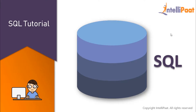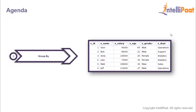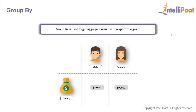Hey guys, welcome back to this SQL tutorial series. In this session we'll be working with a GROUP BY statement. The GROUP BY statement is used to get aggregate results with respect to a group. For example, let's say we wanted to find out the average salary with respect to gender — the average salary of male employees separately and average salary of female employees separately. This is where we can use GROUP BY to divide the data into two groups, male and female, and find out the average salary of each group separately.